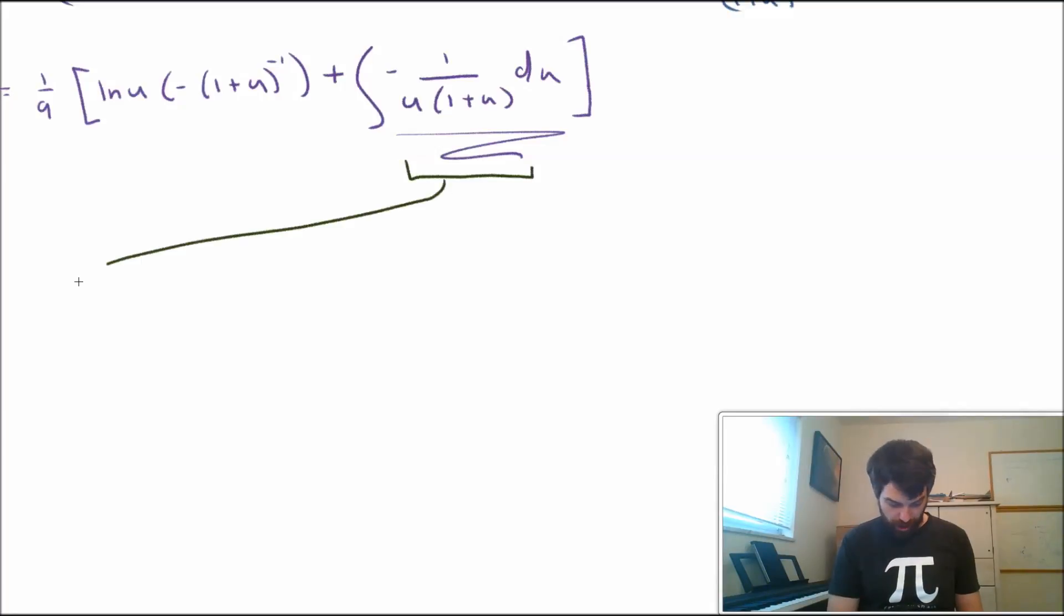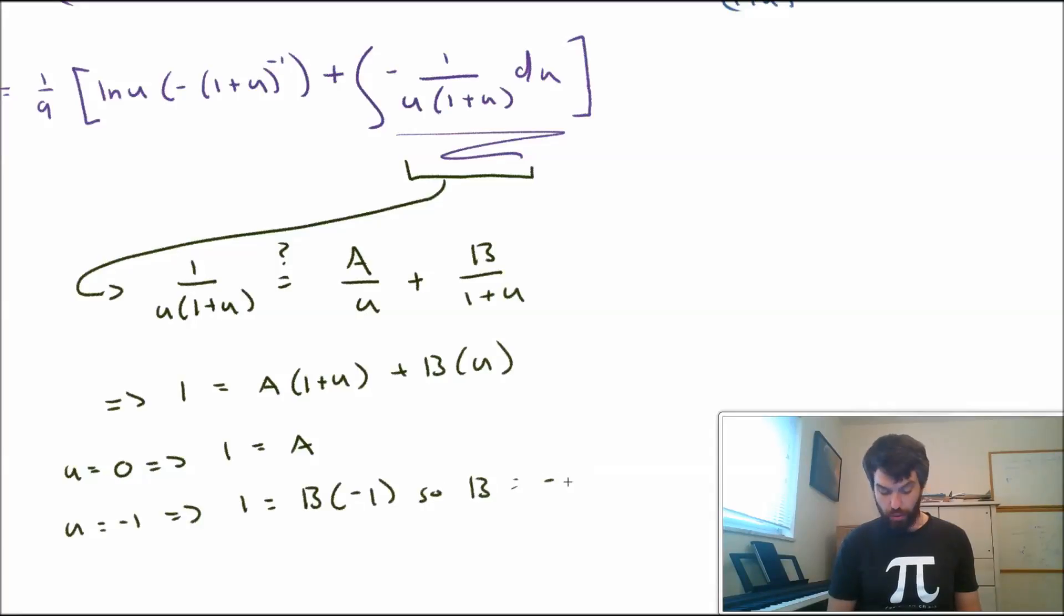So what I want to do is take the integrand here and apply the method of partial fractions to it. I have 1 divided by u times 1 plus u. My standard guess, this is a product of linear factors, is going to be A divided by u plus B divided by 1 plus u. Multiplying by the denominator, this is going to give me 1 equals A times 1 plus u plus B times u. And I need to solve for A and B now, so I'm going to set u equal to 0. That is going to imply that 1 is just equal to A. And u equals minus 1 is going to imply that 1 equals B times minus 1. So B is equal to minus 1.